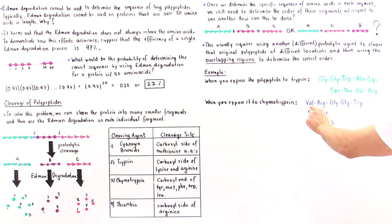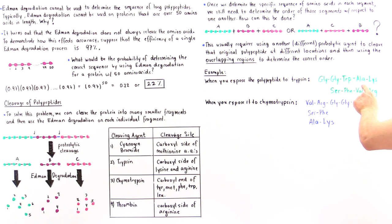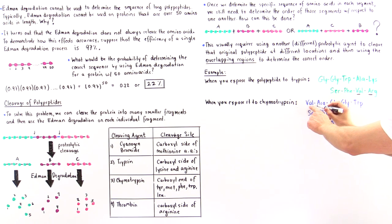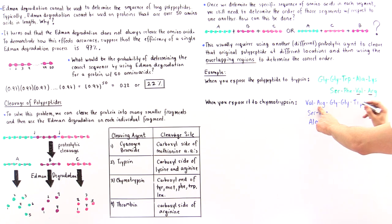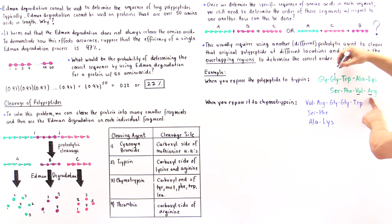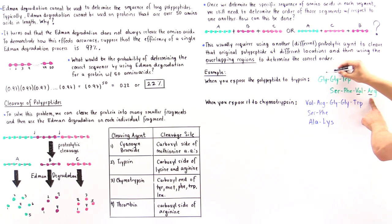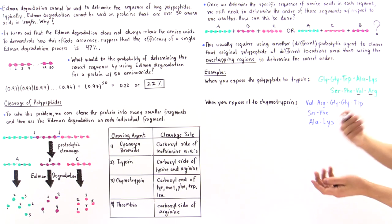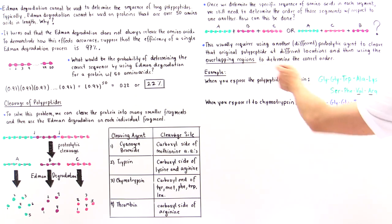Notice that in one fragment we have valine followed by arginine. The only place we also see valine and arginine in the chymotrypsin fragments is right here — valine then arginine — and then it cuts off. According to the adjacent chymotrypsin fragment, we have glycine, glycine, tryptophan, and so forth. So if valine-arginine is followed by a cut, and glycine-glycine-tryptophan begins on the other side, then that arginine must be bonded to that glycine.